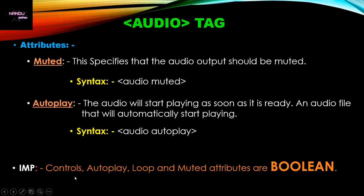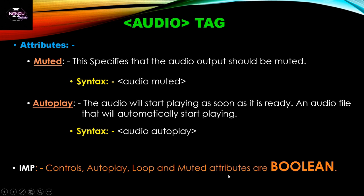These are the main attributes of the audio tag. One important thing: the audio tag's controls attribute, autoplay attribute, loop attribute, and muted attribute — these four attributes are boolean attributes. SRC is the remaining one that is not boolean. These four attributes are boolean attributes.